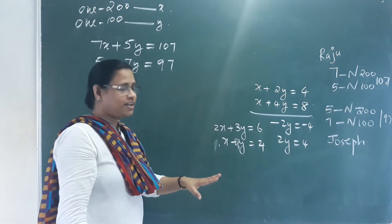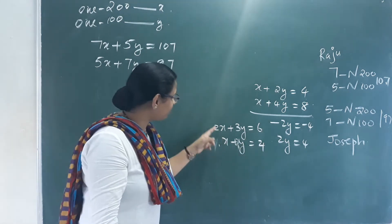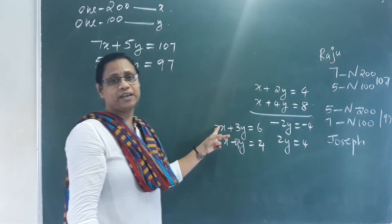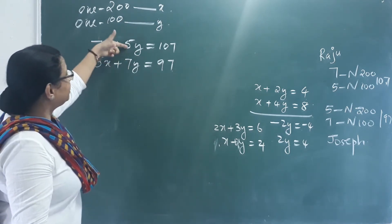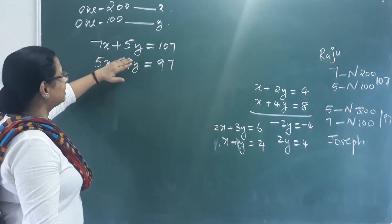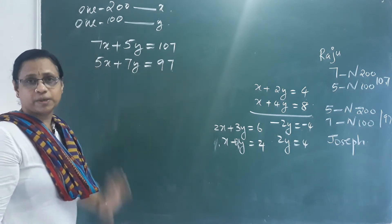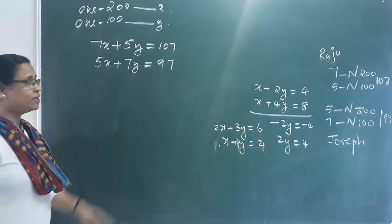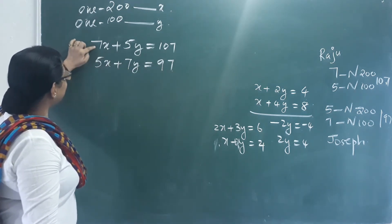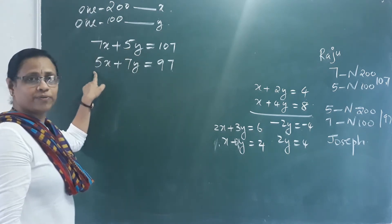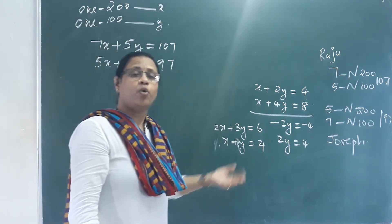In this situation, we can multiply one equation and subtract to eliminate a variable. If the coefficients of x and y are not the same, we need to make them the same. In our notebook problem, the coefficients are 7 and 5 in the first equation and 5 and 7 in the second. We multiply both equations by 5 and 7 respectively to make coefficients equal, then we can add or subtract.